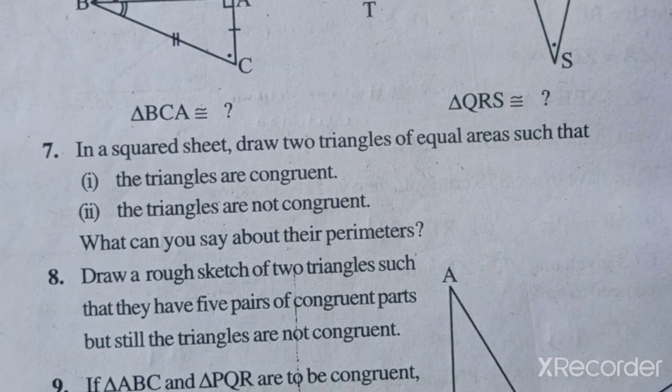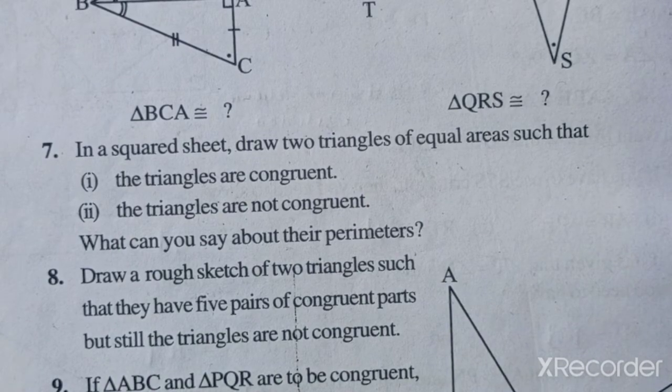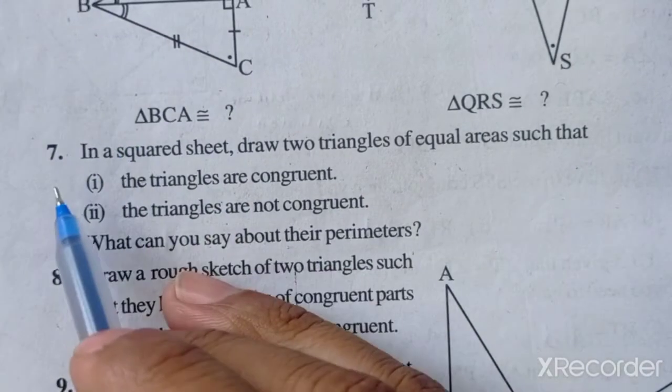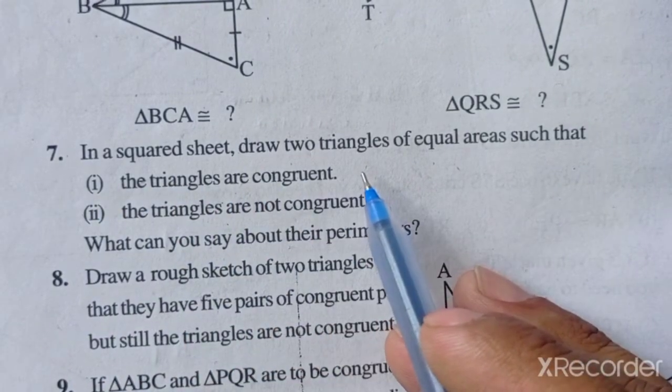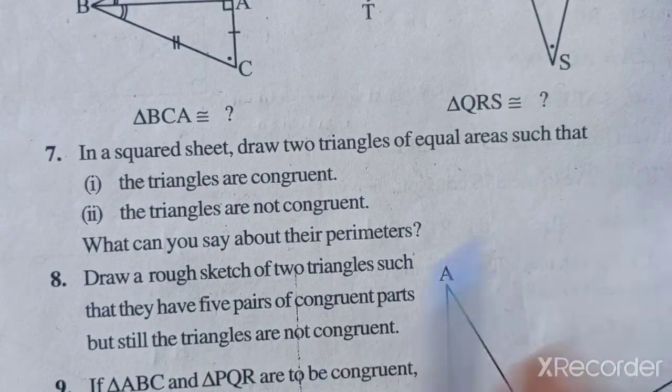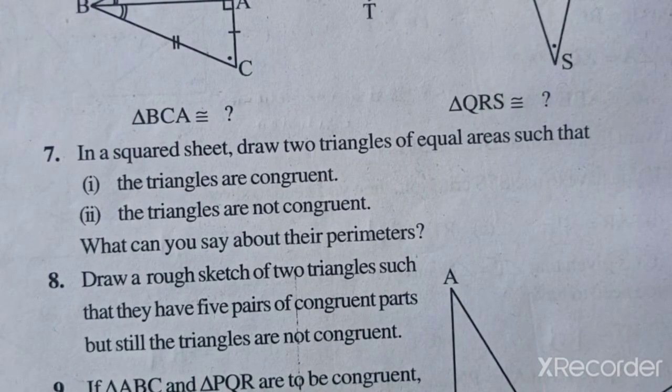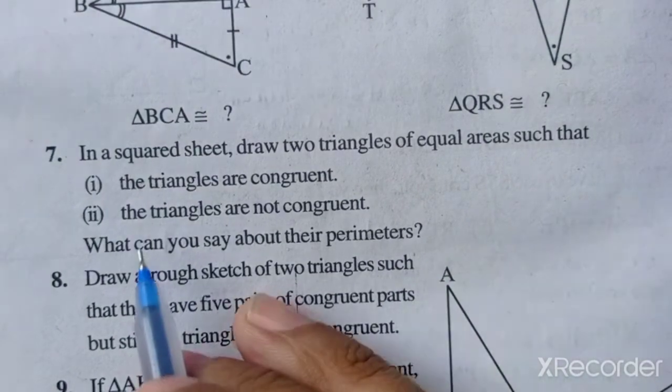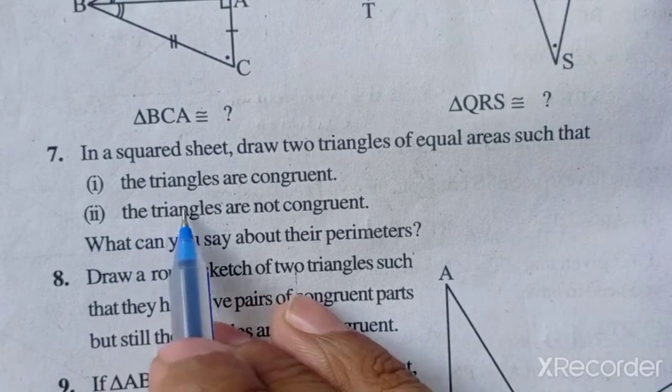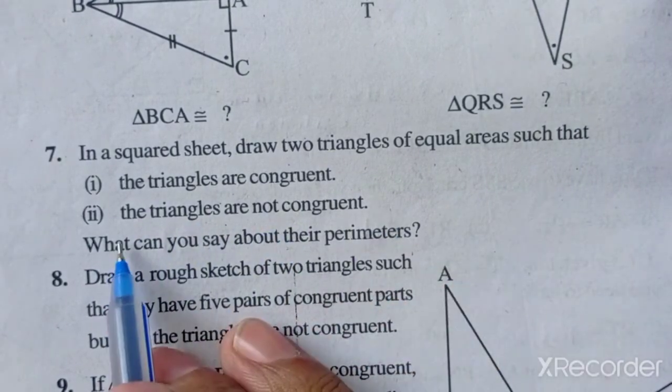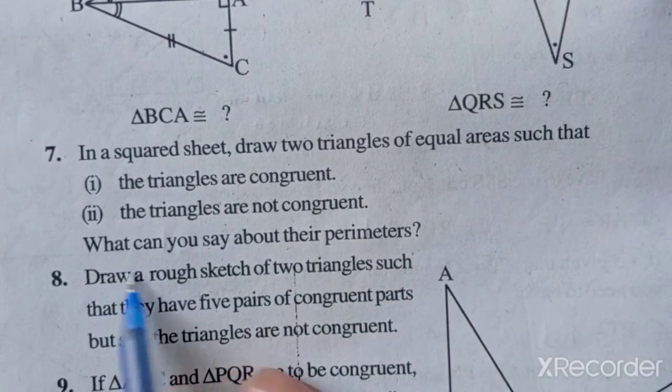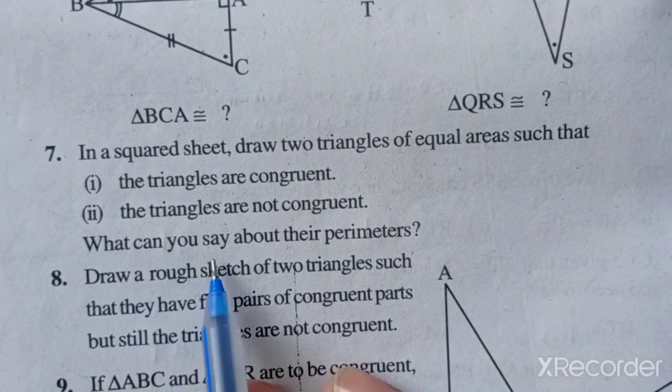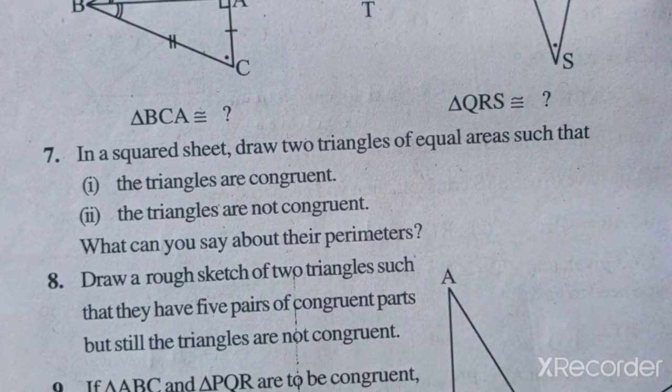My dear students, today I will teach you section 7.2 part 4. Question 7: In a squared sheet, draw two triangles of equal area such that the condition is the triangles are congruent, and second, the triangles are not congruent. What can you say about their perimeters?